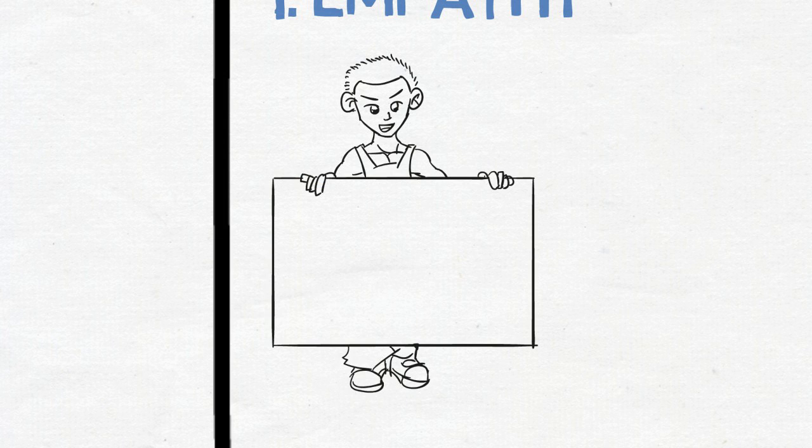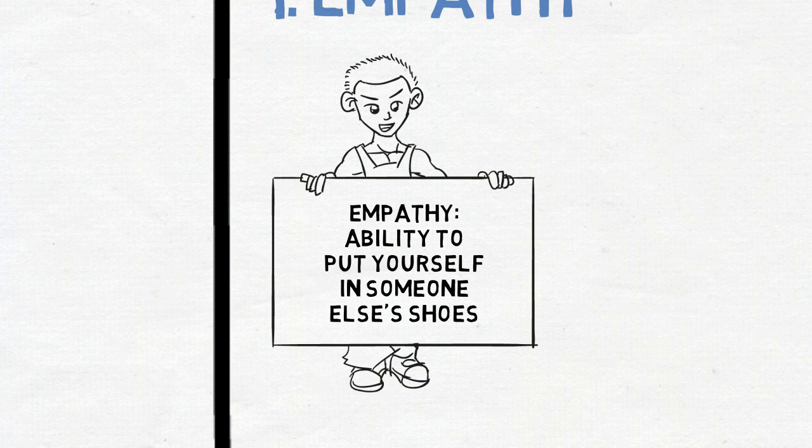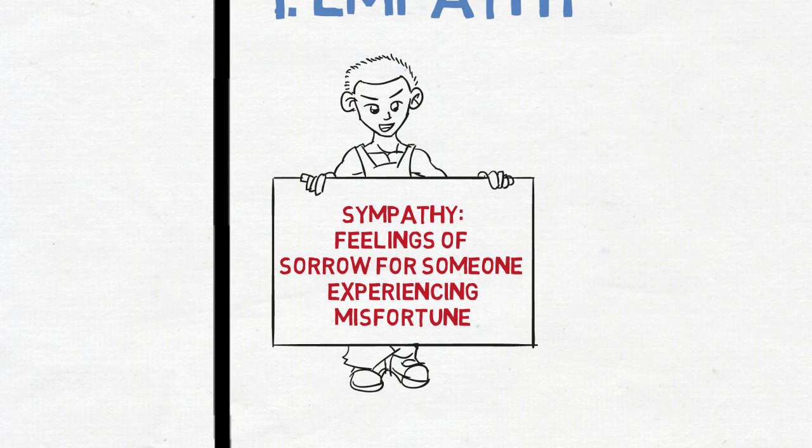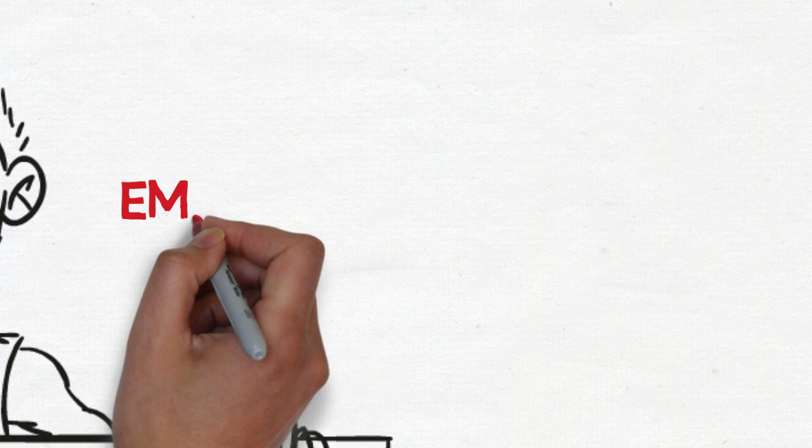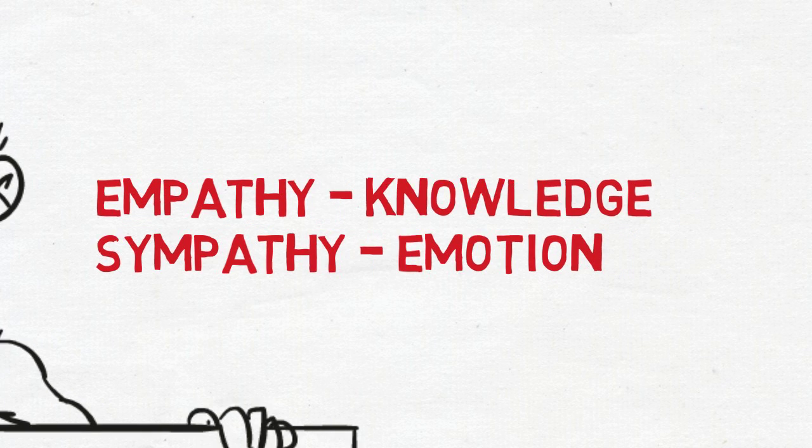Number one, empathy. Now, just what is empathy? Simply put, empathy refers to the ability to put yourself in someone else's shoes. And how does this differ from sympathy? Sympathy refers to the feelings of sorrow for someone who's experiencing misfortune. So in short, empathy is a knowledge while sympathy is more of an emotion.